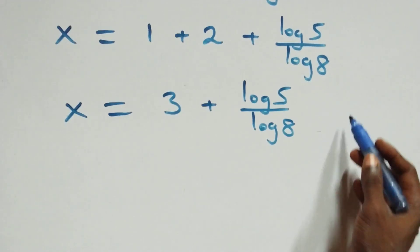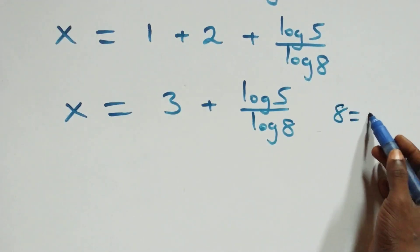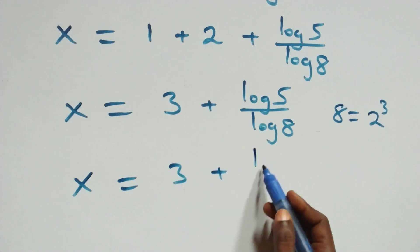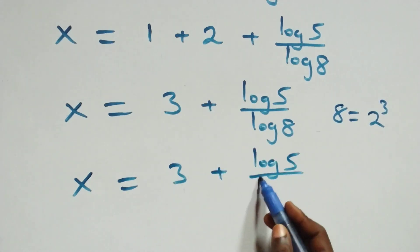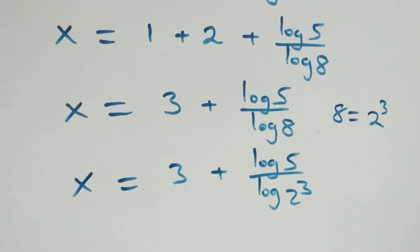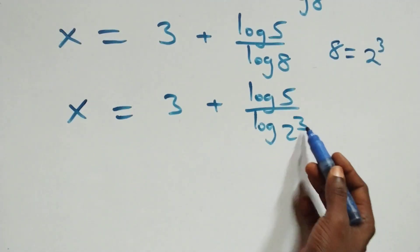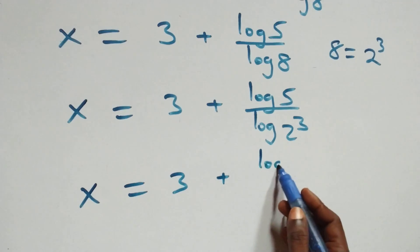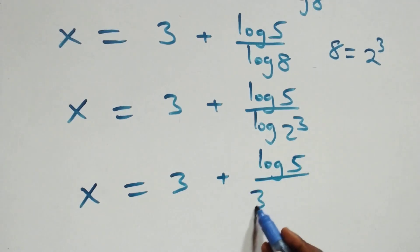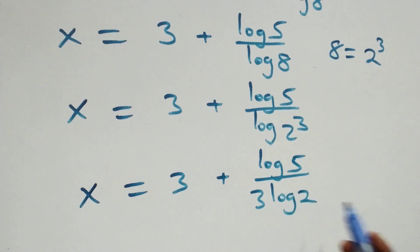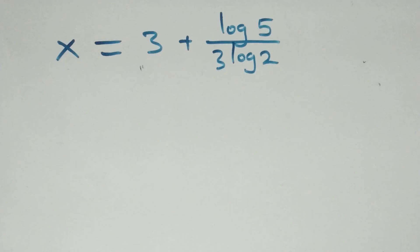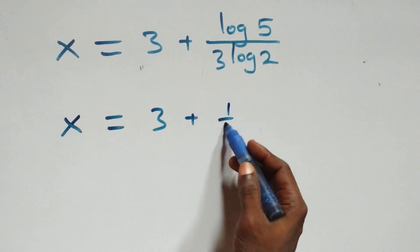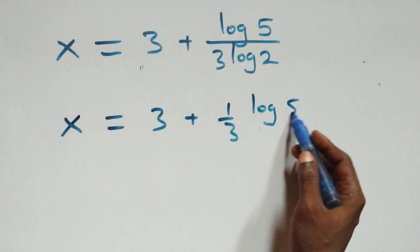From here we can express 8 as 2 times 2 times 2, which is 2 cubed. We apply the power rule of logarithms, so 3 comes out, and we have x equals 3 plus log 5 over 3 log 2. The next step: we can write this as x equals 3 plus one-third multiplied by log 5 over log 2.